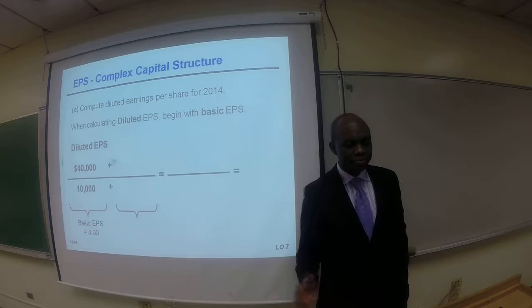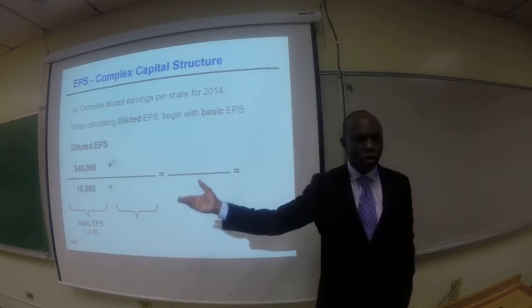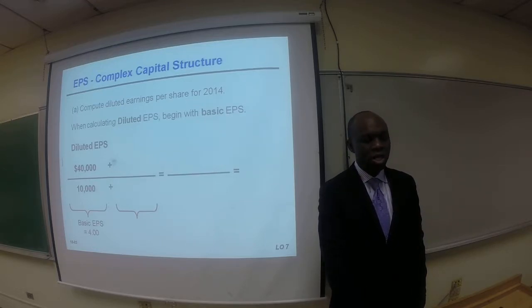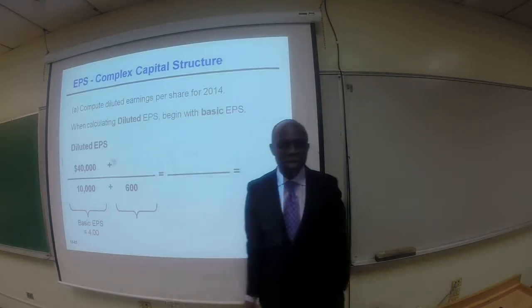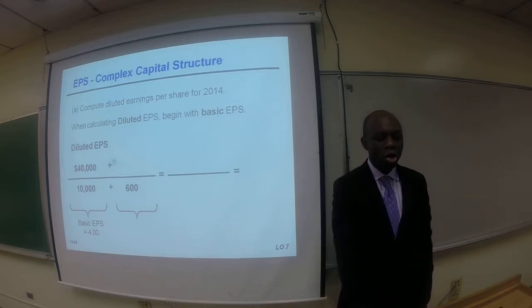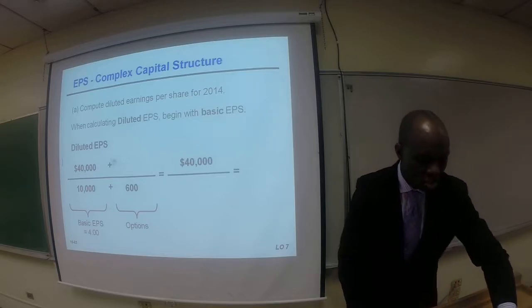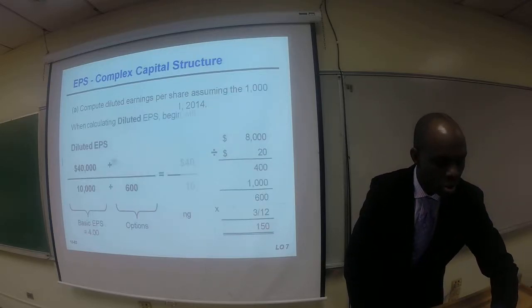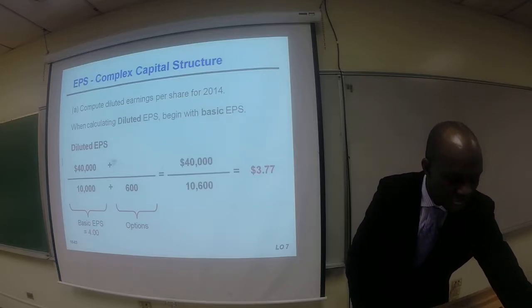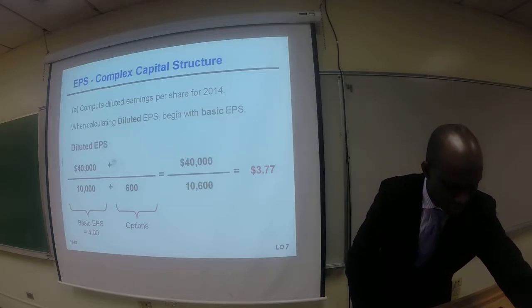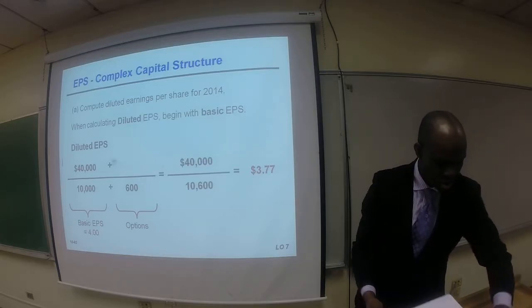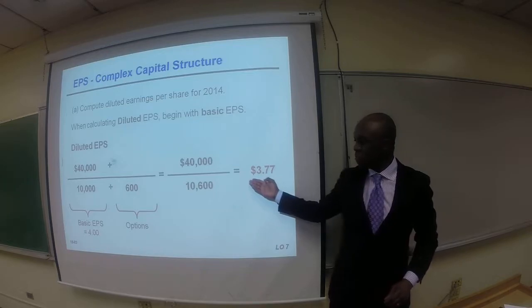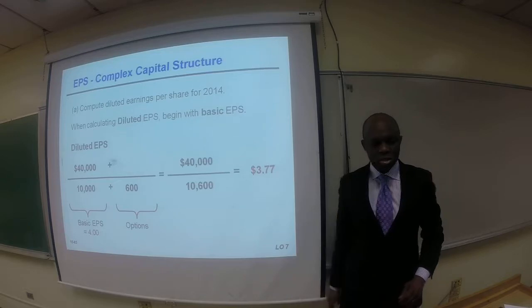In computing diluted EPS, the first step is to compute basic EPS — straightforward: $40,000 income divided by 10,000 outstanding common shares gives a basic EPS of $4. Now for the twist: the 600 additional shares modify the denominator. Those are the 600 incremental shares from the options. Doing the math, we come up with $3.77 as the diluted EPS. So basic EPS is $4 and diluted EPS is $3.77.